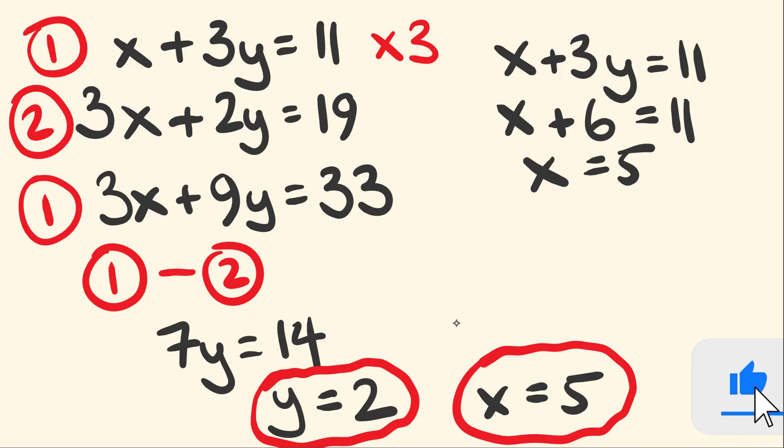But one last step, which you don't have to do, but it's worth doing if you want to. We're just going to substitute our x and y values into the second equation just to check that we got the correct answer. So let's do that. We have 3x plus 2y is equal to 19.